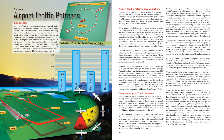When entering the traffic pattern at an airport without an operating control tower, inbound pilots are expected to observe other aircraft already in the pattern and conform to the traffic pattern in use. If there are no other aircraft present, the pilot should check traffic indicators on the ground and wind indicators to determine which runway and traffic pattern direction to use. Many airports have L-shaped traffic pattern indicators displayed with a segmented circle adjacent to the runway. Upon identifying the proper traffic pattern, the pilot should enter at a point well clear of the other airplanes.